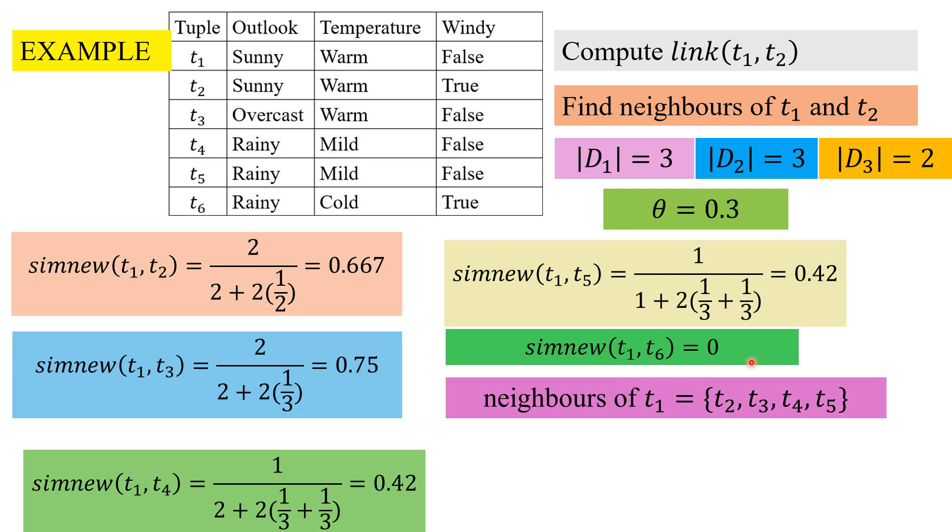However, with t6, when you look at the tuples there is no common attribute, so the similarity is 0. Neighbors of t1 are t2, t3, t4, t5.